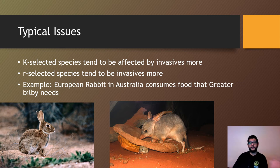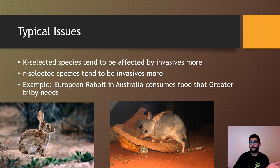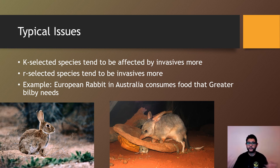Some typical issues these species might face: K-selected species tend to be affected by invasives a lot more. For example, the European rabbit is an invasive species in Australia — it's a generalist and more of an R-selected species with lots of babies, so it out-competes and out-consumes the greater bilby, a small marsupial mammal. The European rabbit was brought in for hunting, became invasive, and now the greater bilby is endangered or at least threatened. This connects back to the previous discussion on invasives, generalists, and specialists.